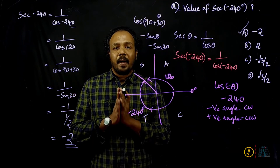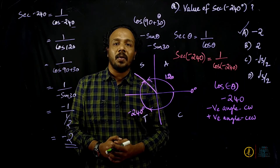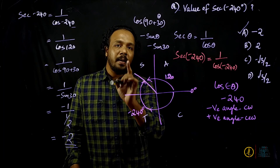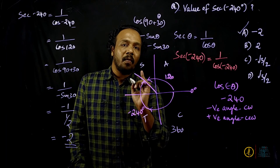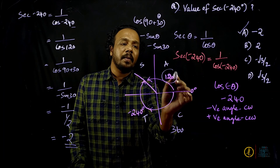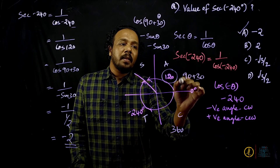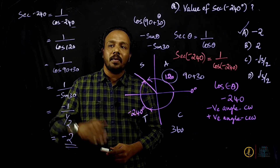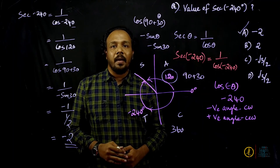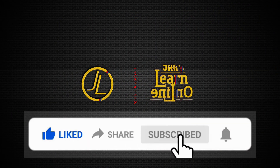To summarize the steps: we converted the negative angle to a positive angle, split 120° into 90° + 30°, applied the identity cos(90° + θ) = −sinθ, and got the answer −2. If you like this class, please like this video and subscribe to the channel. Please press the bell button.